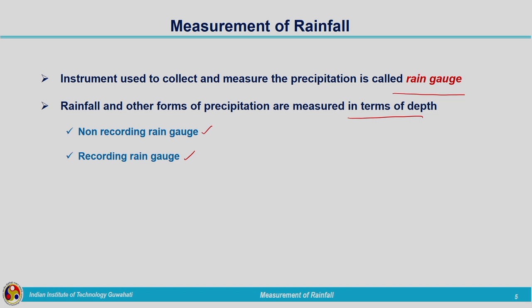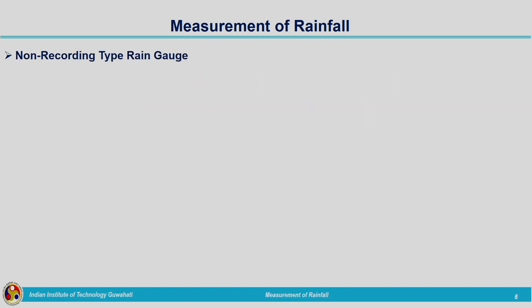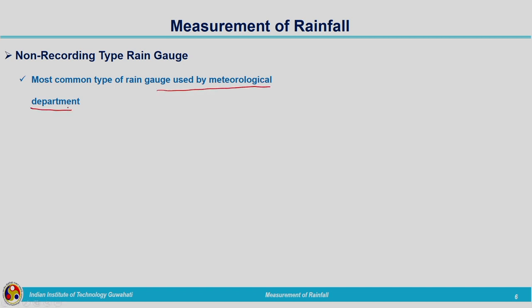As the name indicates, the recording type will automatically record how much is the rainfall depth, while the non-recording type will not record — we have to manually measure the rainfall. Non-recording type of rain gauge was the most common type that IMD was using, but now the majority have been replaced by recording type rain gauges. Still, we need to have an idea of what the non-recording type is.